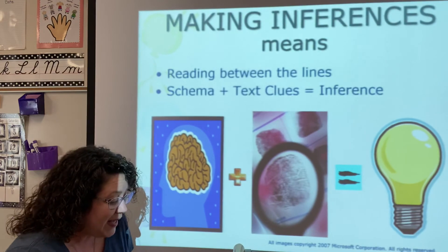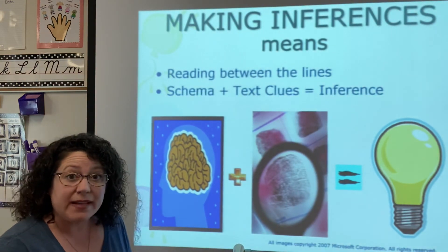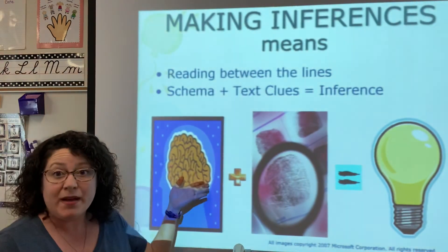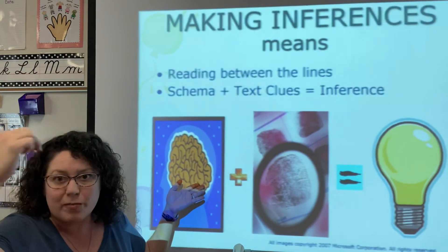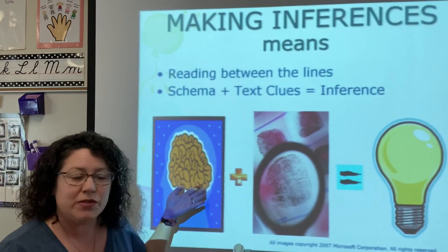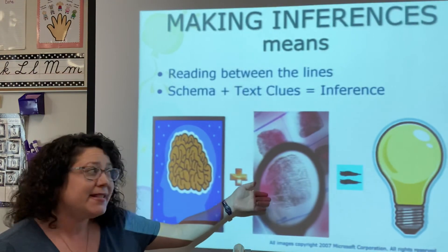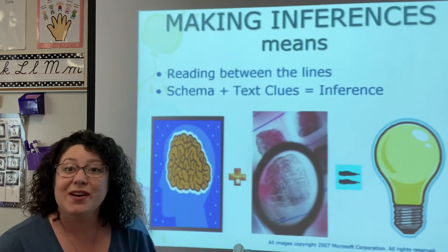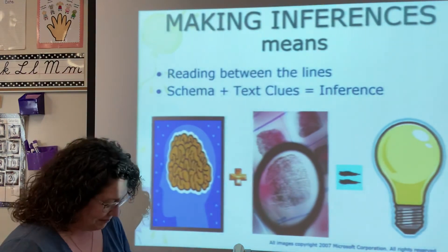So making inferences means reading between the lines. You're using your schema — your background knowledge, your brain filing cabinet — going through the files to figure out what you know, combined with clues in the text, and that gives you the inference, the answer. We're going to work on this more tomorrow and later in the week with our making meaning story. Remember: background knowledge plus text clues equals your inference.